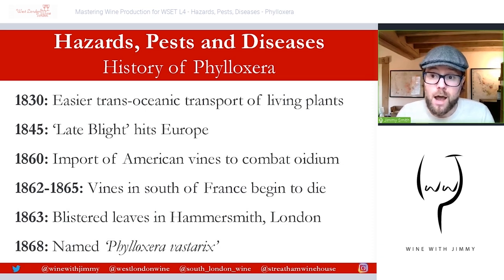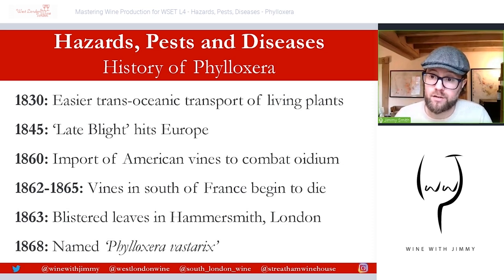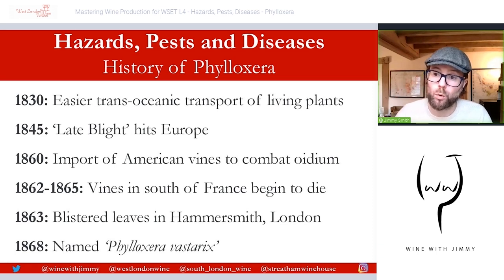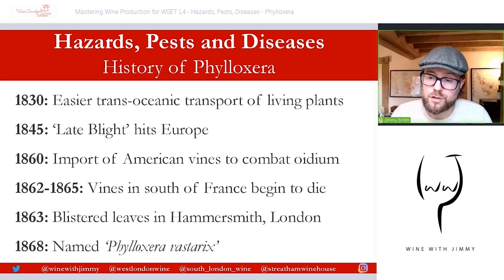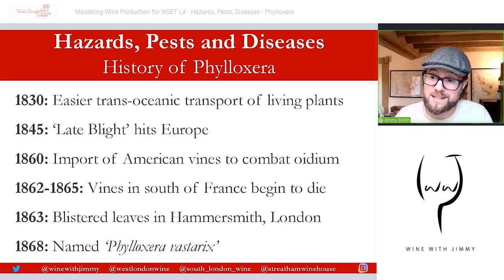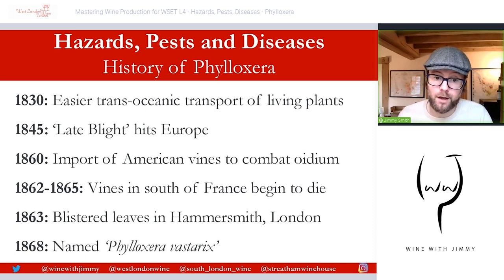Around 1869, the first attempts at destroying Phylloxera vastatrix were carried out with carbon bisulfide and all associated sulfur products. This took many shapes and forms, including injecting these quite volatile compounds into the soils to try and destroy the bug. But this quite dramatically affected the landscape as well, and in fact many people lost their lives handling these very volatile compounds.